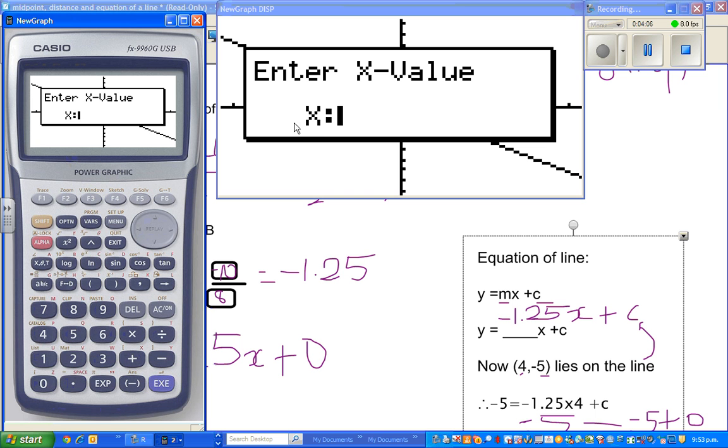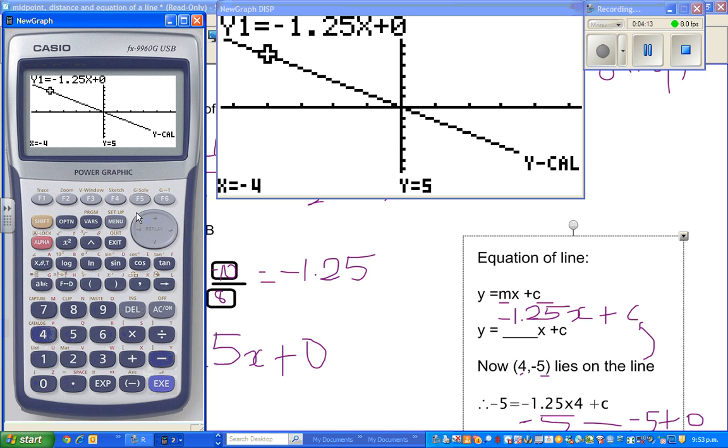We want to confirm when x is negative 4, y should be 5. Enter negative 4. The calculator would tell me it's 5. There we go.